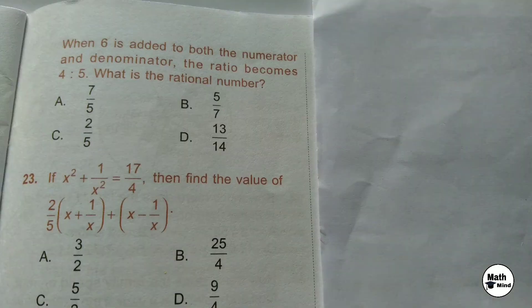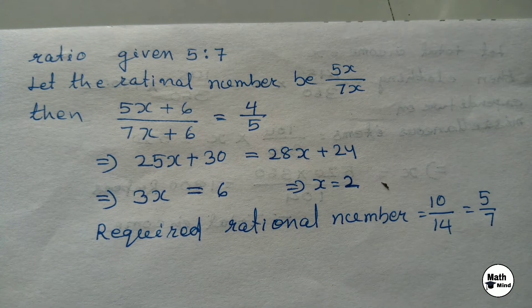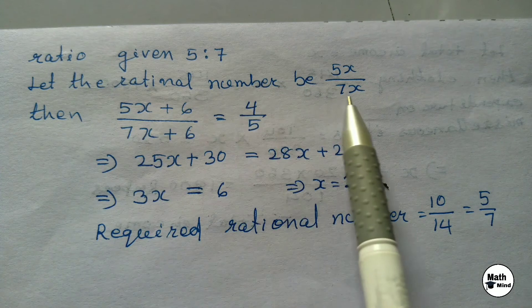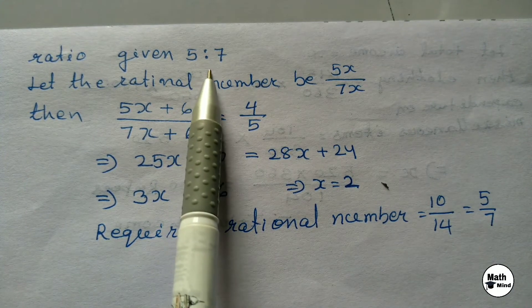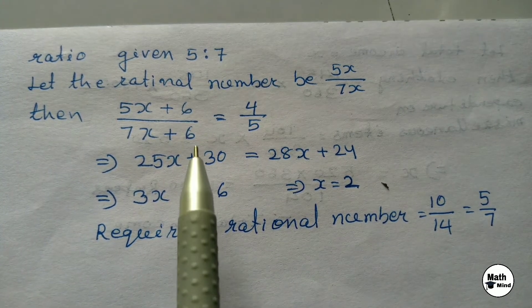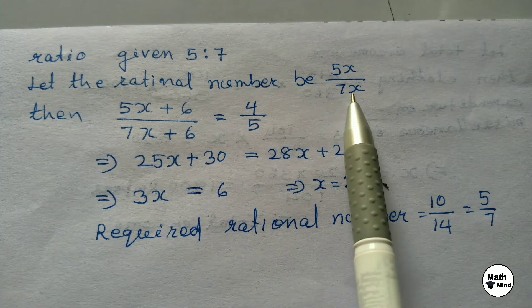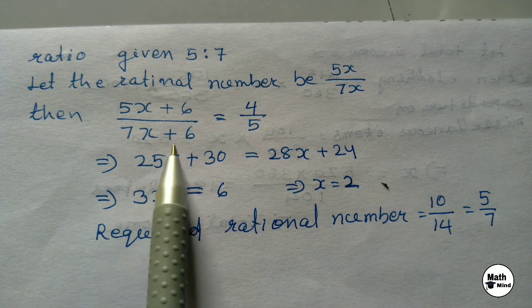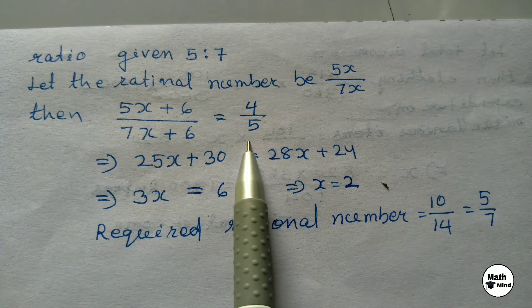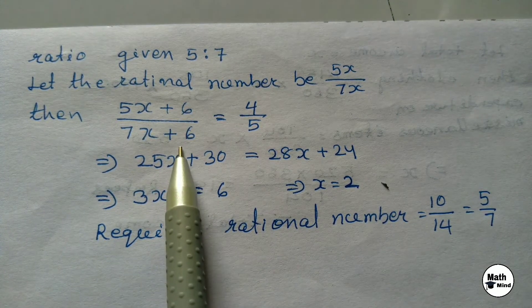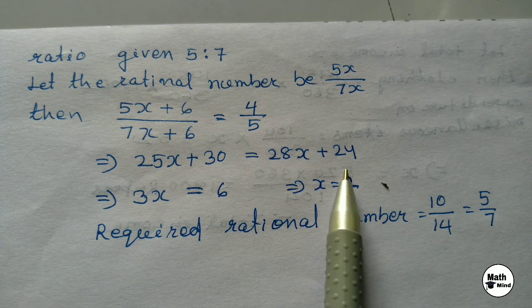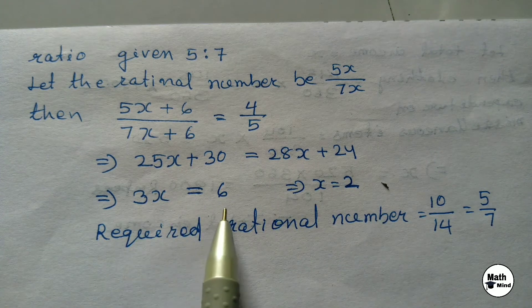Question 22: The numerator and denominator of a rational number are in ratio 5:7. When 6 is added to both numerator and denominator, the ratio becomes 4:5. What is the rational number? Let the rational number be 5x/7x, where x is the common factor. According to the question, (5x+6)/(7x+6) = 4/5. Cross-multiplying: 25x+30 = 28x+24, which gives 3x = 6, so x = 2.